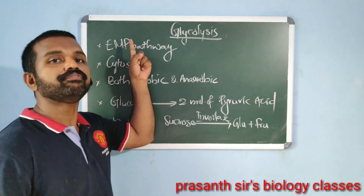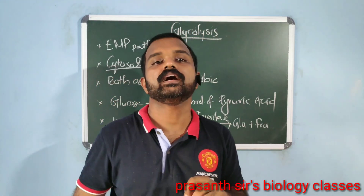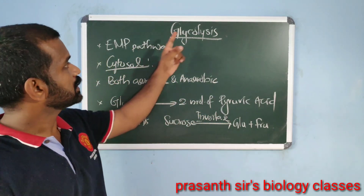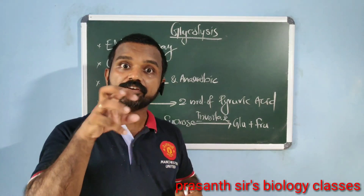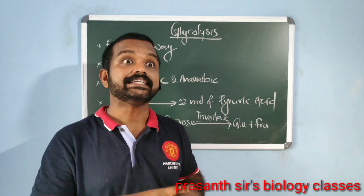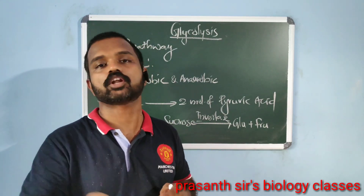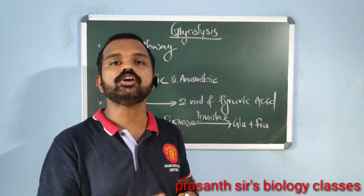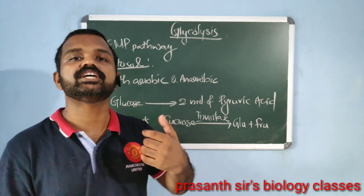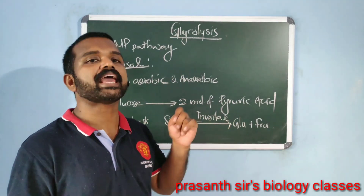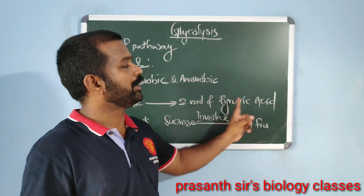Glycolysis is also known as the EMP pathway, named after the discoverers Embden, Meyerhof, and Parnas. Glycolysis takes place in the cytosol. It takes place in both aerobic and anaerobic organisms. However, it is the only process of respiration in anaerobic organisms, whereas in aerobic organisms other processes also occur. Glycolysis involves the partial breakdown of glucose into two molecules of pyruvic acid — a hexose 6-carbon sugar is converted into pyruvic acid, a 3-carbon compound.